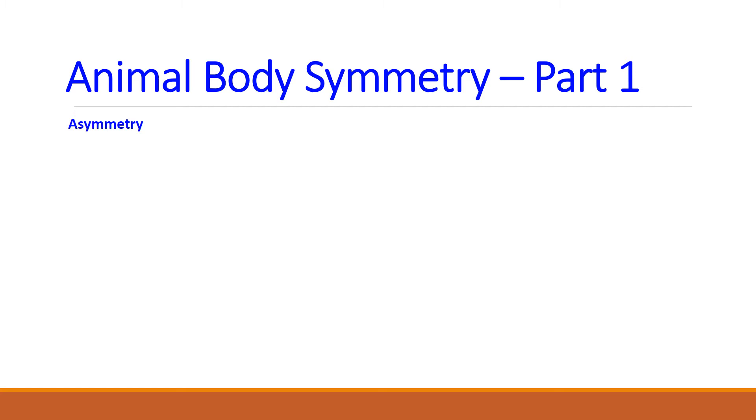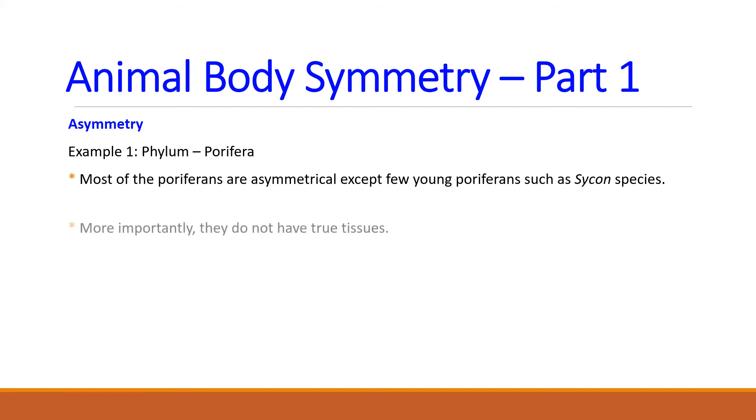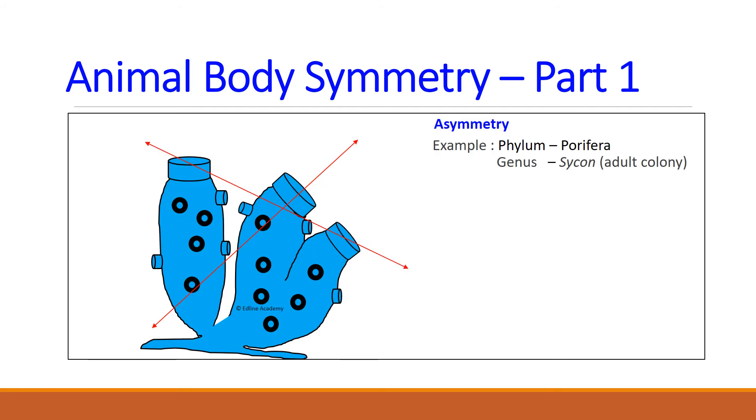Let's look at some examples of asymmetry. A means no symmetry. The first example is the members of porifera. Most of the porifera are asymmetrical forms except very few young sponges like Sycon. They do not possess any true tissues. Just take a look at this colony. This is the Sycon colony. It has three individuals. We are unable to get two identical halves if we cut this colony along any of these axes. So this is a good example for asymmetry.